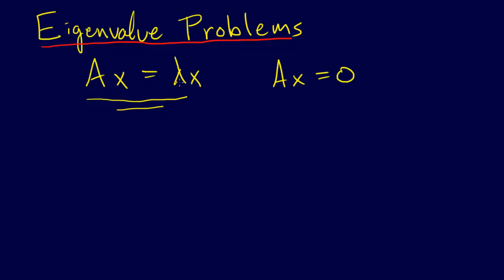This is called an eigenvalue problem, and the values of lambda that make this true are called eigenvalues. And the values of x that make this true, that correspond to the values of lambda.